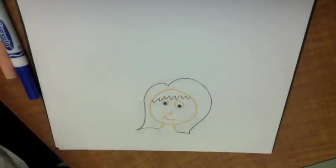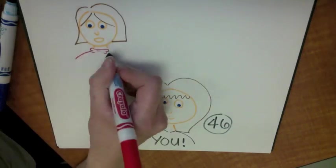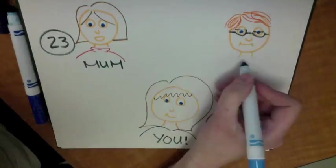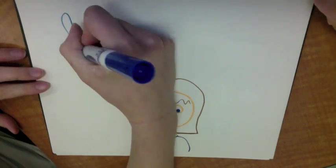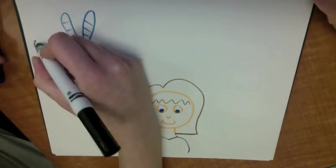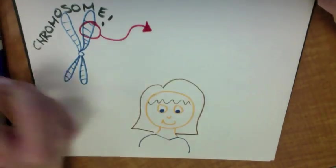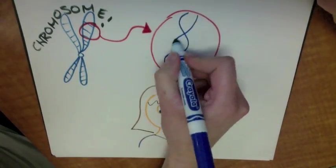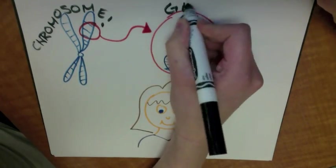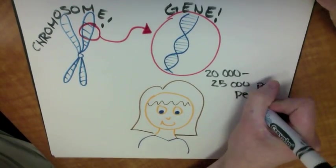This is you. Your DNA is represented by 46 chromosomes. Your mom gives you 23, and the other 23 come from your dad. On each chromosome lies your genes. Each gene is a section of your DNA that is responsible for a specific trait. It is estimated that each person has between 20,000 and 25,000 genes in their DNA.